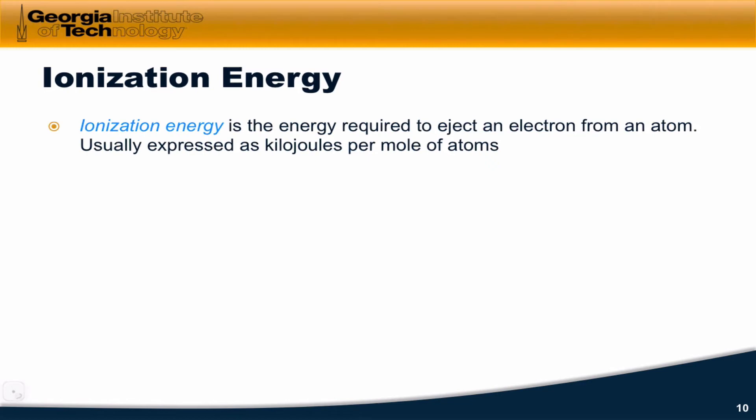Ionization energy is defined as the energy required to eject an electron from an atom. So experimentally, we take a collection of atoms, we bombard said atoms with very high energy radiation until we're able to recognize when an electron has been ejected from the atom. The amount of energy required to do this, usually for a mole of atoms expressed in kilojoules per mole, is defined as the ionization energy.